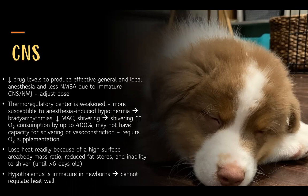Their thermoregulatory center is weakened, making them more susceptible to anesthesia-induced hypothermia, which can result in bradyarrhythmias, decreased MAC, and shivering — and shivering increases oxygen consumption. They lose heat readily due to a high surface area to body mass ratio, decreased fat stores, and an inability to shiver until greater than six days old. The hypothalamus is immature in newborns, so you must be constantly aware of temperature throughout the perioperative period.